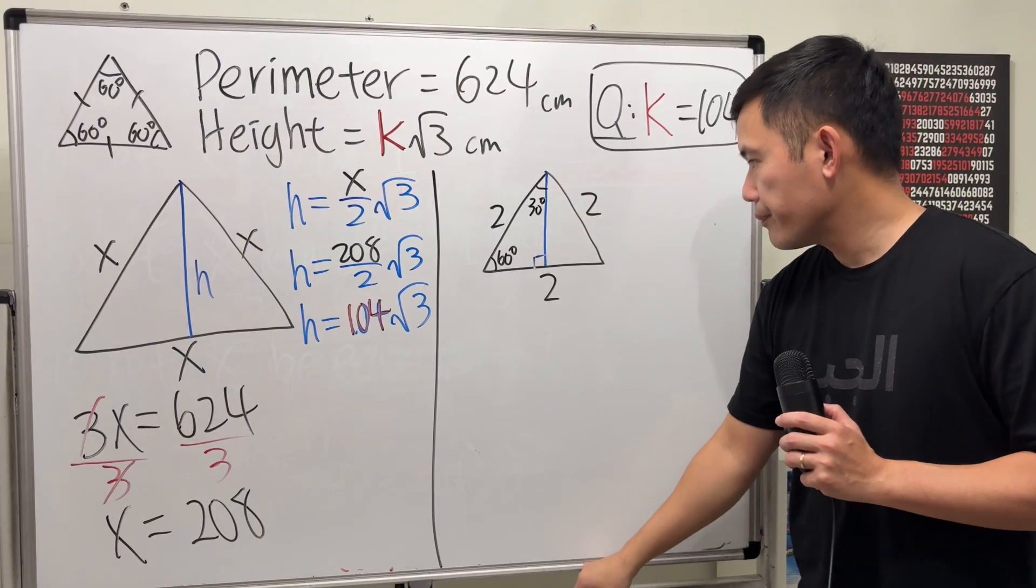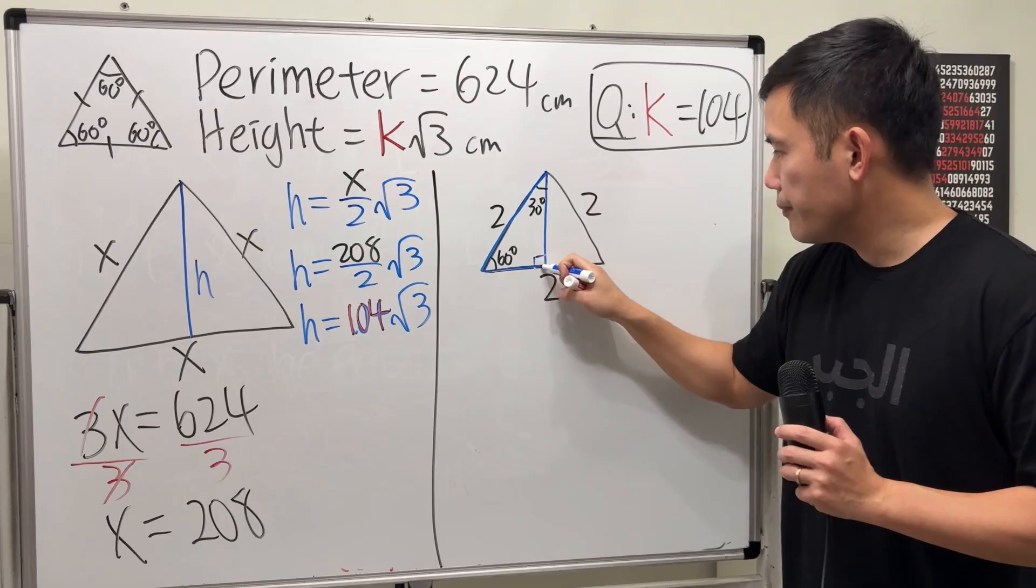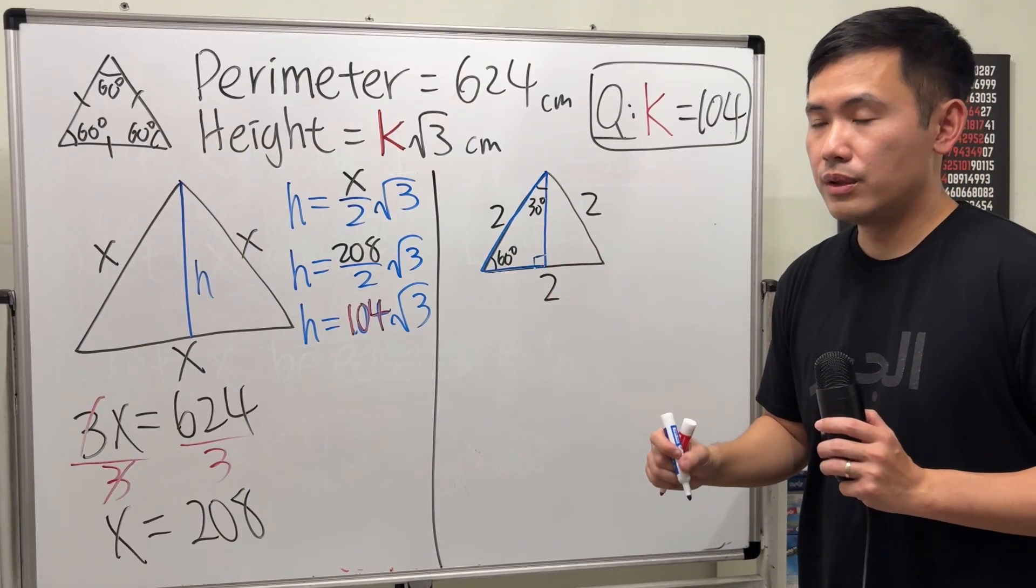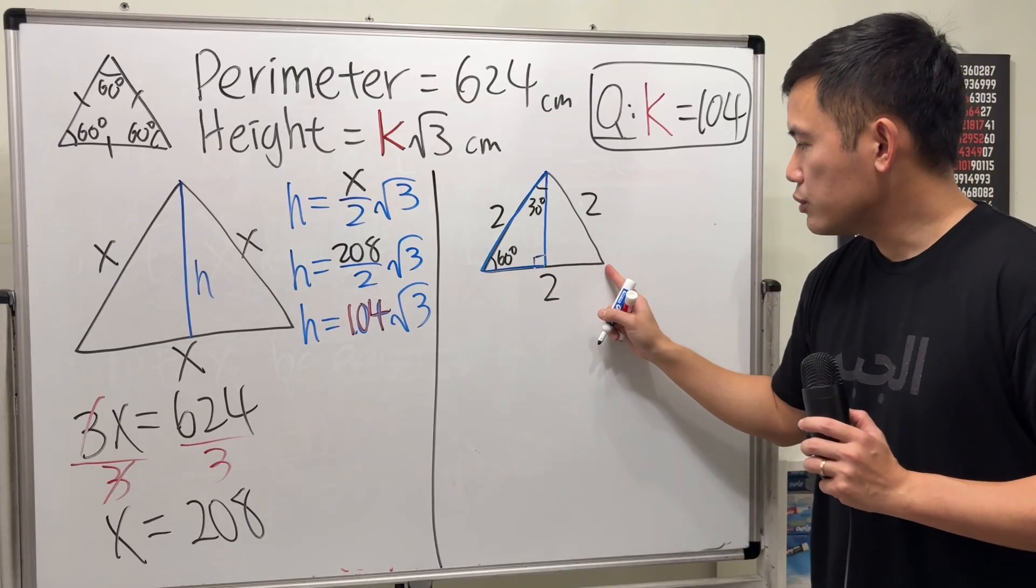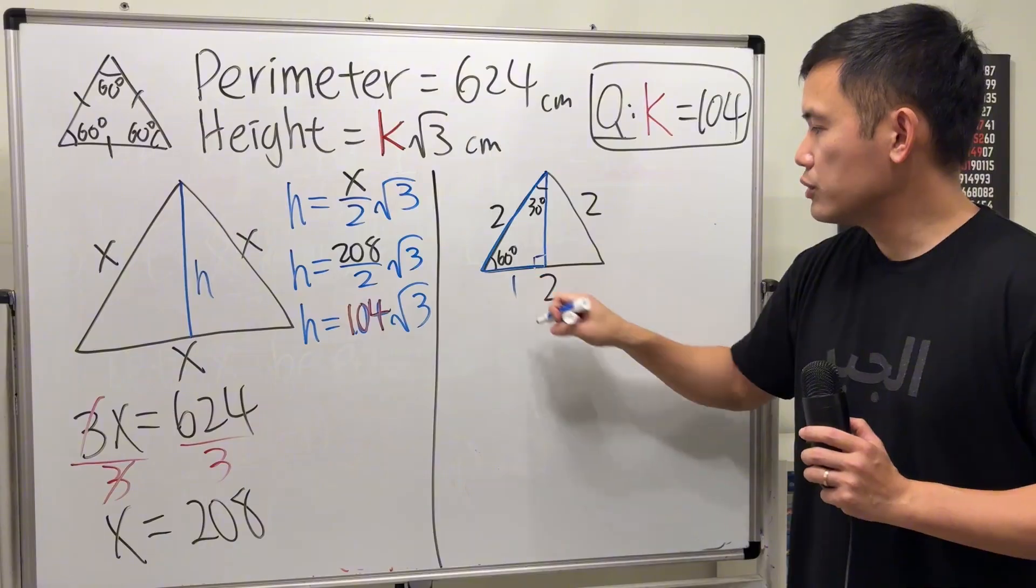So from here, if now we look at this triangle here, we have a 30, 60, 90 special right triangle. Now, this right here is 2. Now we cut this into 2 parts. So this right here will be 1.